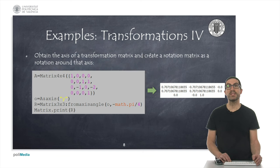We can extract information about a given axis of a transformation matrix by using the axis method, which returns a vector with three elements with the values of the indicated axis. We can use this vector to perform a rotation around the set axis by a certain angle by using the fromAxisAngle method.